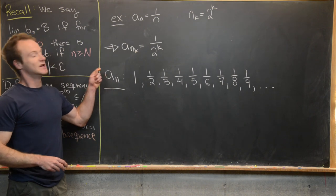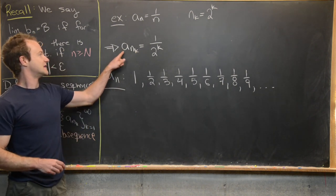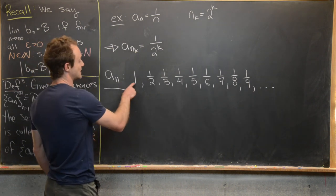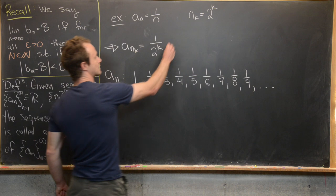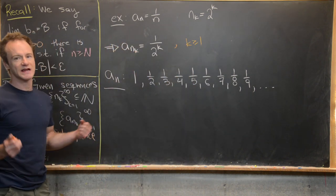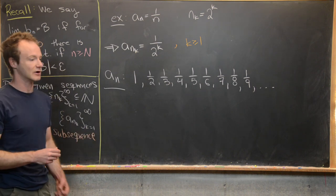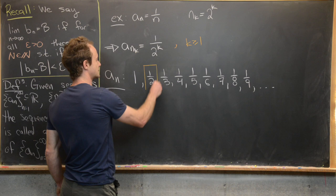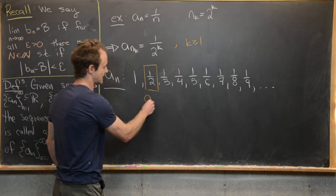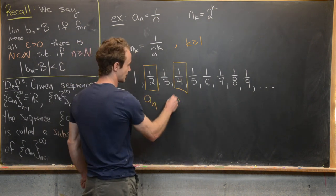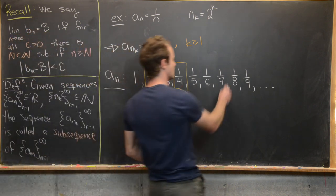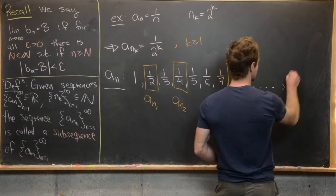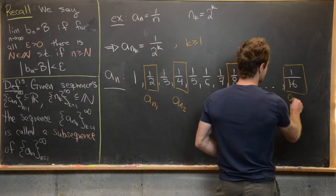What I want to do is square the elements which are part of the subsequence, i.e., the elements of a_{n_k}. The smallest k can be is 1, so that disallows the first term. So a_{n_1} is 1/2, a_{n_2} is 1/4, a_{n_3} is 1/8, and then way out here a_{n_4} is 1/16, and so on — we're skipping a bunch of terms each time.